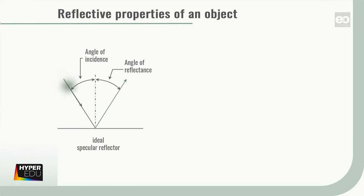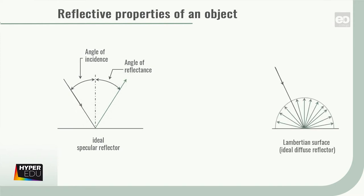In the ideal case of a specular reflector, the angle of reflectance corresponds to the angle of incidence. The ideal case of diffuse reflection is described by a Lambertian surface, which reflects the incoming radiation uniformly in all directions.